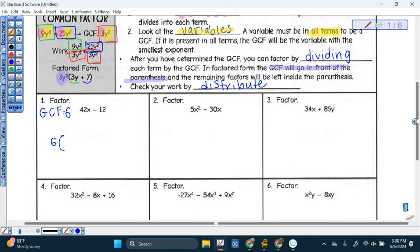I have to divide this by 6 and divide this by 6. Since I start with two terms here, I have to end up with two terms in my answer. So let's divide this. 42x divided by 6. 7x. What's negative 12 divided by 6? Negative 2. So 6 times 7x minus 2.